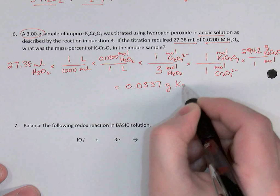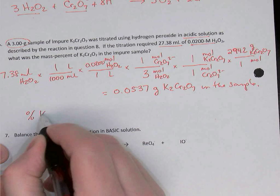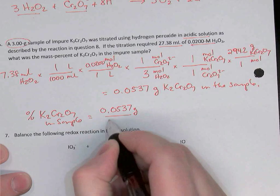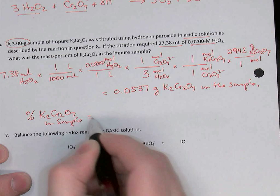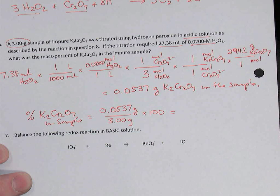The sample weighed three grams. So the percentage of potassium dichromate in the sample is: mass of potassium dichromate divided by mass of the sample, times 100 to get percent — which gives 1.79% potassium dichromate.